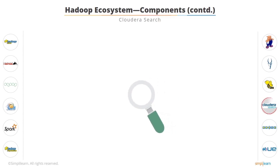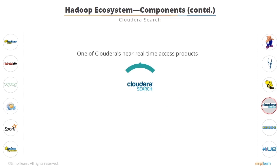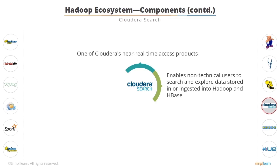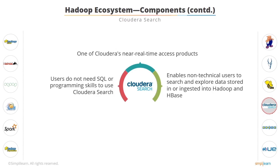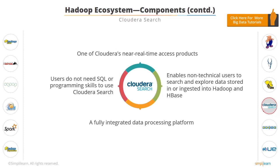After the data is analyzed, it is ready for users to access. Cloudera Search is one of Cloudera's near-real-time access products. It enables non-technical users to search and explore data stored in or ingested into Hadoop and HBase. Users do not need SQL or programming skills, as it provides a simple, full-text interface for searching. Cloudera Search uses the flexible, scalable, and robust storage system included with CDH (Cloudera's Distribution Including Hadoop), eliminating the need to move large datasets across infrastructures.